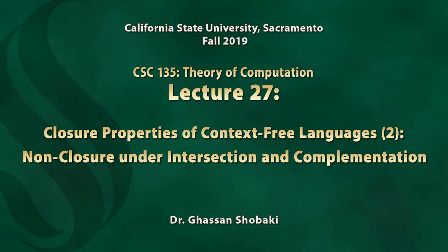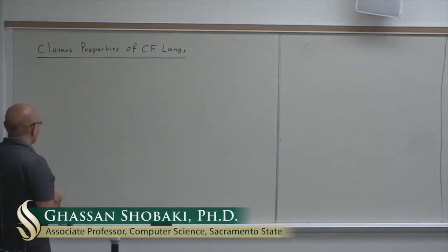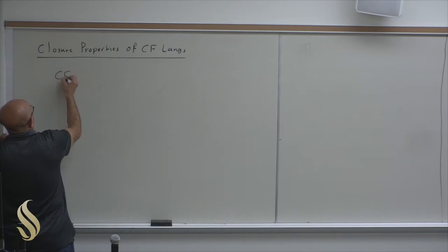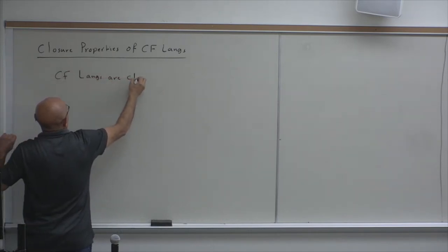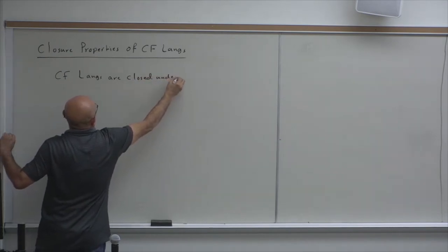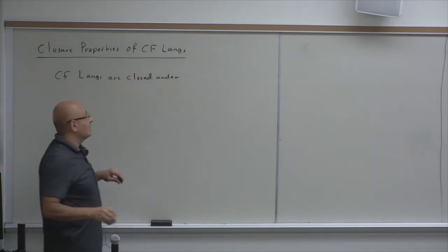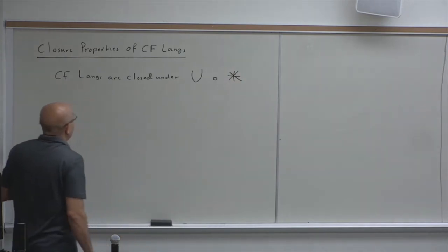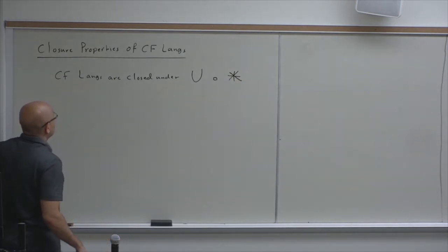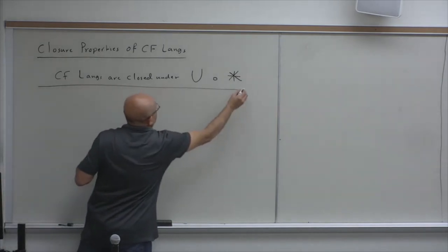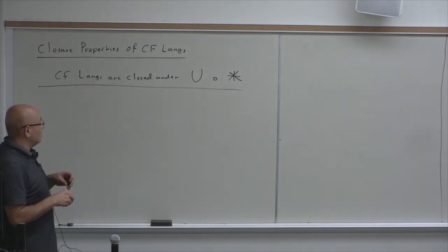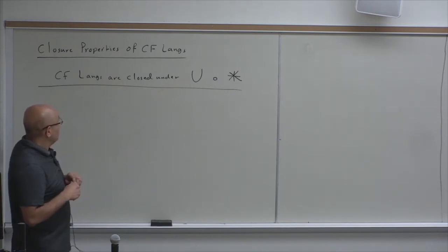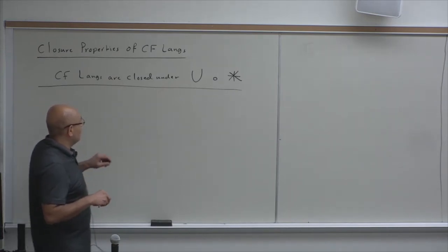We'll be talking about closure properties of context-free languages. Last time we said that context-free languages are closed under union, concatenation, and star. Let's revisit this. Showing that context-free languages are closed under these regular operations — union, concatenation, star — is going to be easier than showing that regular languages are closed under these operations.